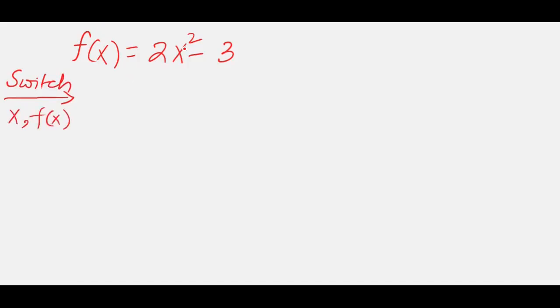This f of x becomes x here and this x becomes function of x. I'm writing 2 here, x becomes function of x, and this raised to 2. This whole thing is raised to 2. And then we have minus 3. The next step is solve for f of x.